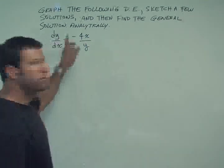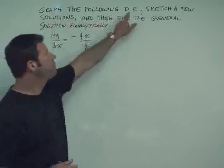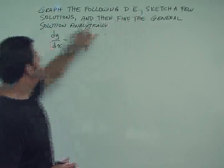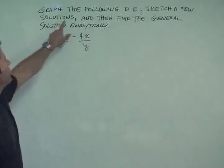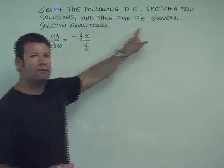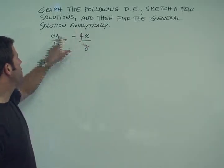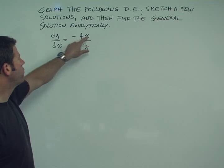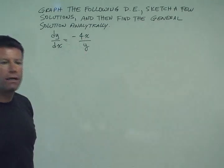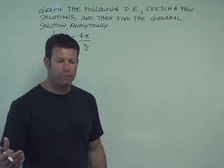The problem statement: graph the following differential equation, sketch a few solutions, and then find the general solution analytically. The equation is dy/dx equals minus 4x divided by y. So the first thing is the slope field.